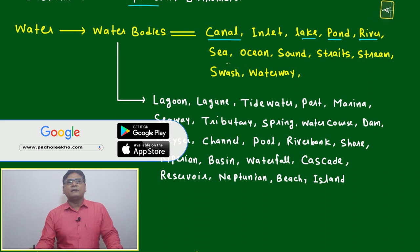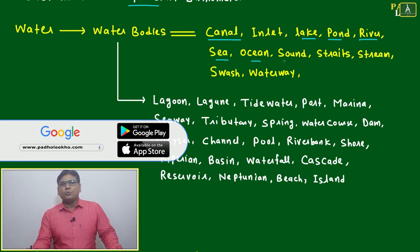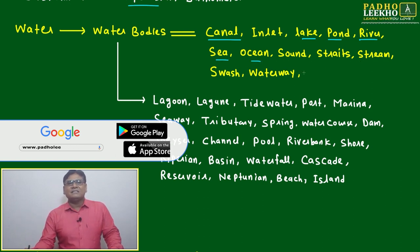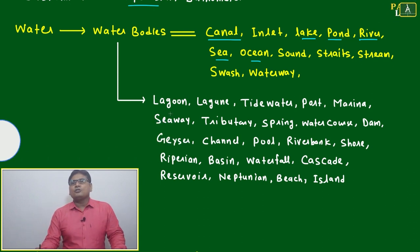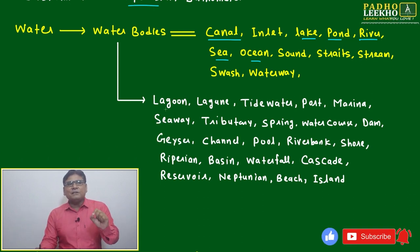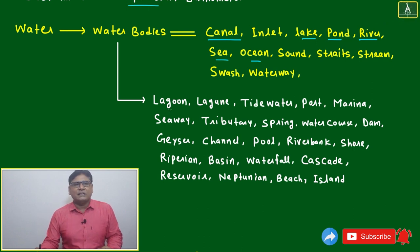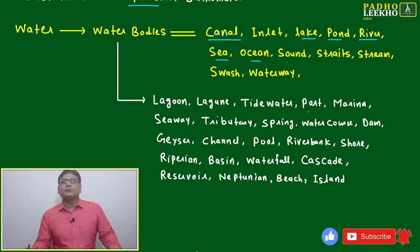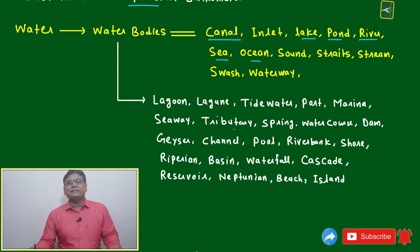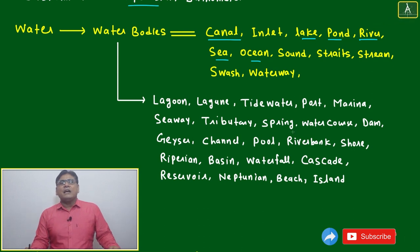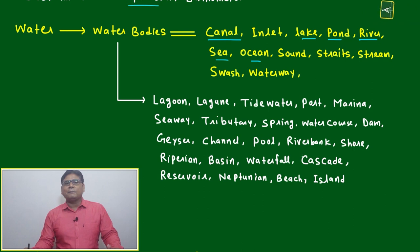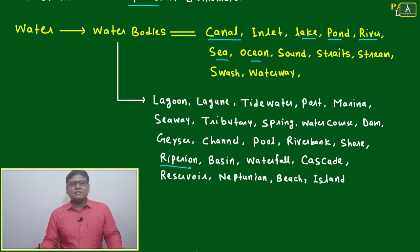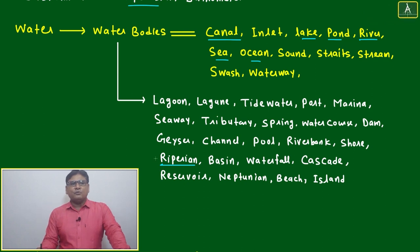River, sea, and ocean are all water bodies. Others include stream, swash, and waterway. For smaller or very specific geographical locations, you have: lagoon, tidewater, port, marina, seaway, tributary, spring, watercourse, dam, geyser, channel, pool, riverbank, and shore.